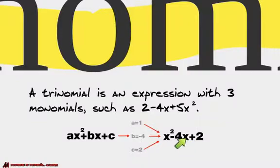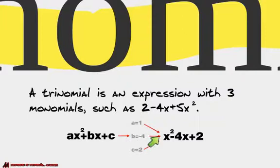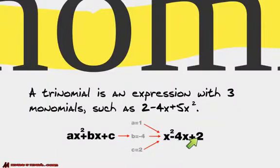So this is how I would write it. My trinomial is x squared minus 4x plus 2. These aren't the same equations. a is 1 — we don't put a 1 there, we don't need to. But there's 1x squared minus 4x plus 2.